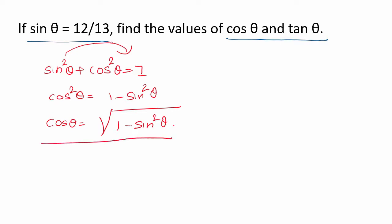So this equation we can use to find the value of cos theta if you know the value of sin theta. Once you find the value of cos theta, finding tan theta is easy. Why? By definition, tan theta equals sin theta by cos theta. So if you know sin theta and cos theta, you can find tan theta.